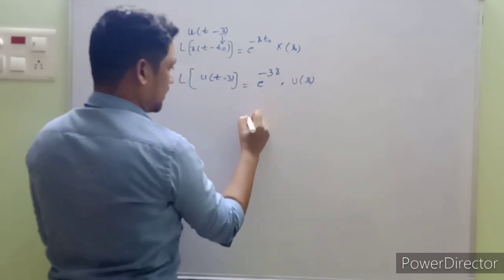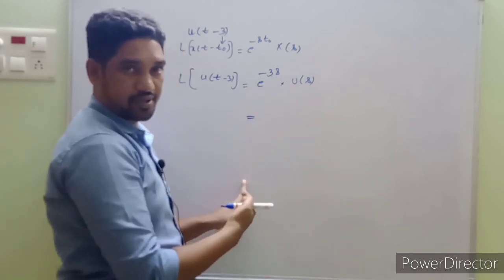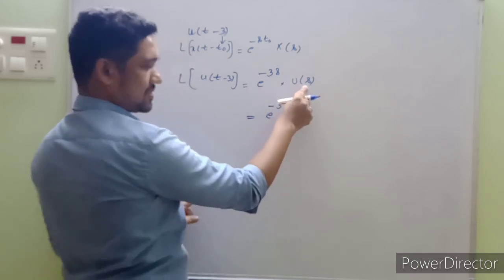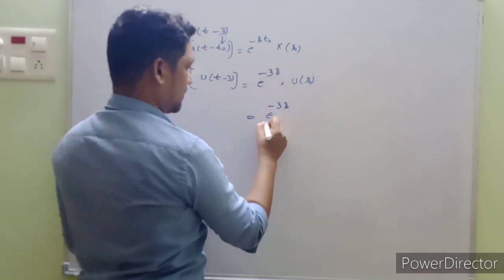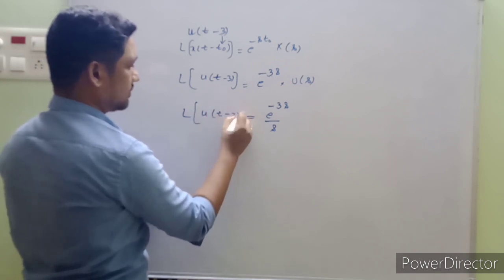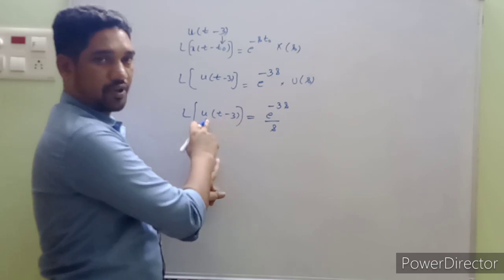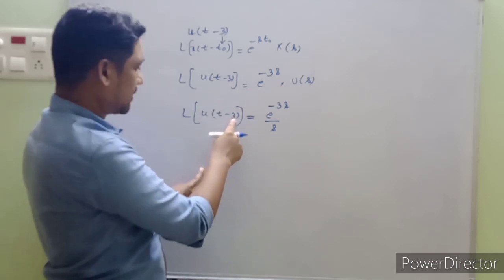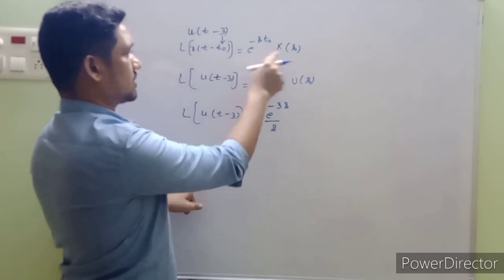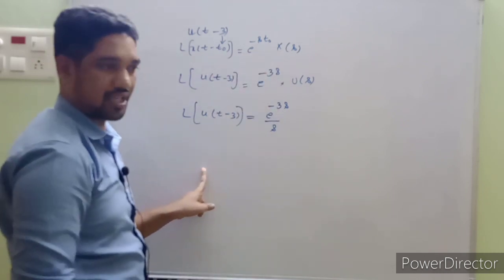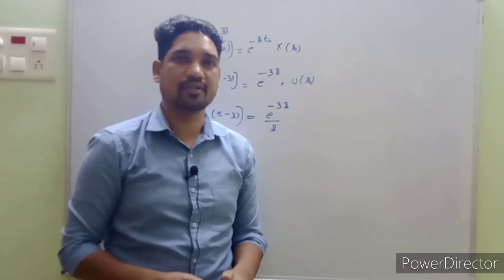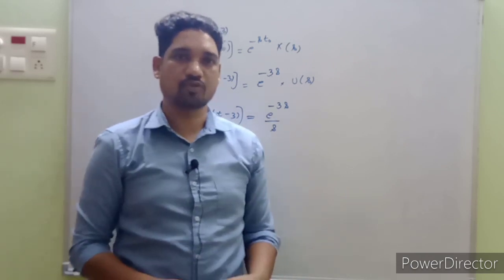The Laplace transform of a step function u(t) is 1/s — I've derived this in my previous videos; you can find the link in the description box. So the final answer is: the Laplace transform of u(t - 3) equals e^(-3s) / s. This is an important application of the time shifting property of Laplace transforms.